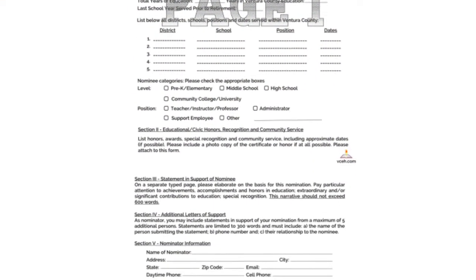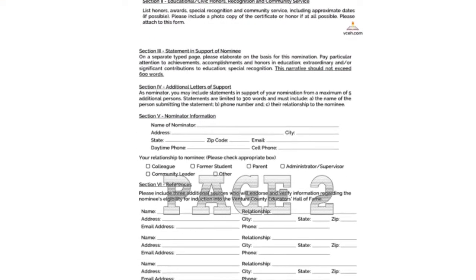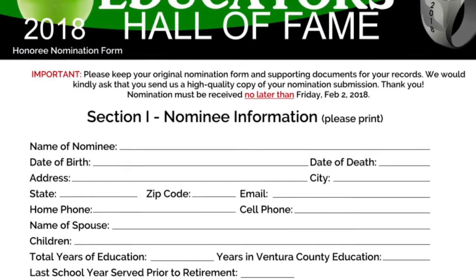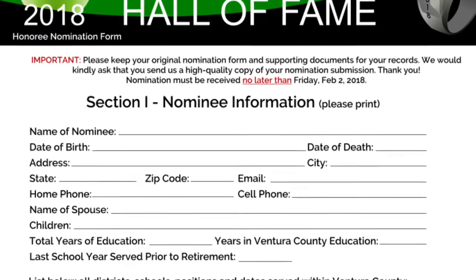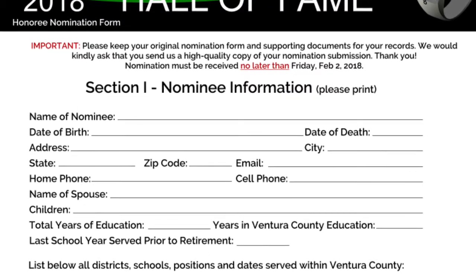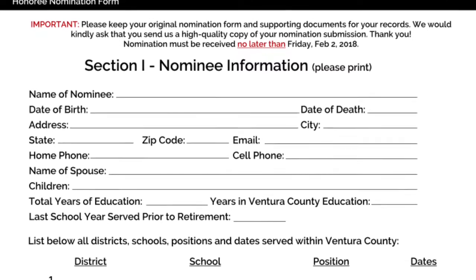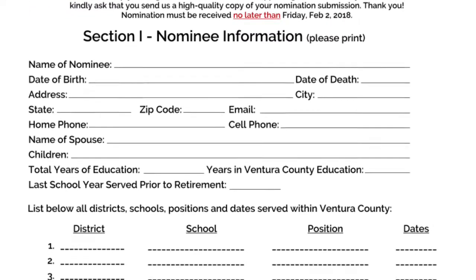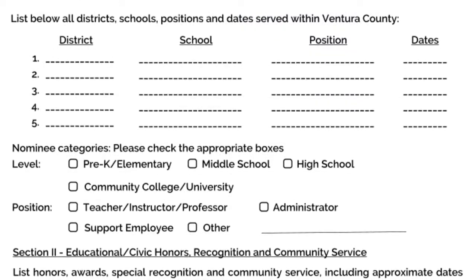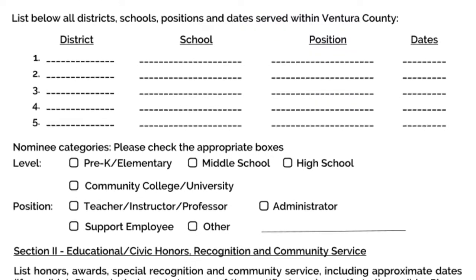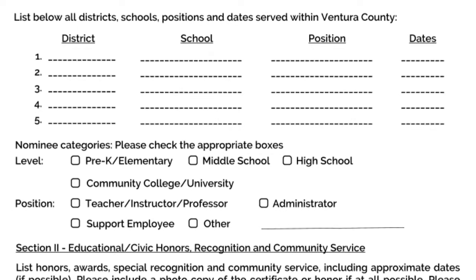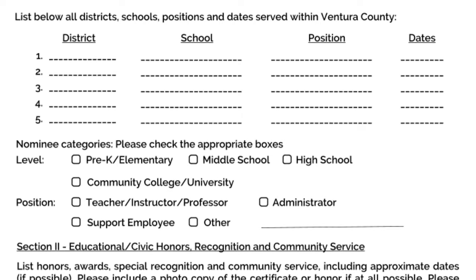The Hall of Fame nomination form is one page double-sided, or two full pages in length. Section 1: Nominee Information. As this section states, please write in all information about the nominee — name, address, email, phone number, etc. The bottom of the page pertains to service in education. Please list all areas served in education, for how long, and where served.